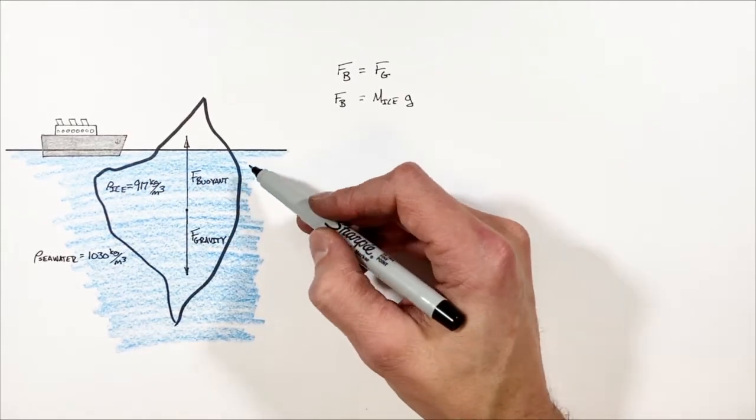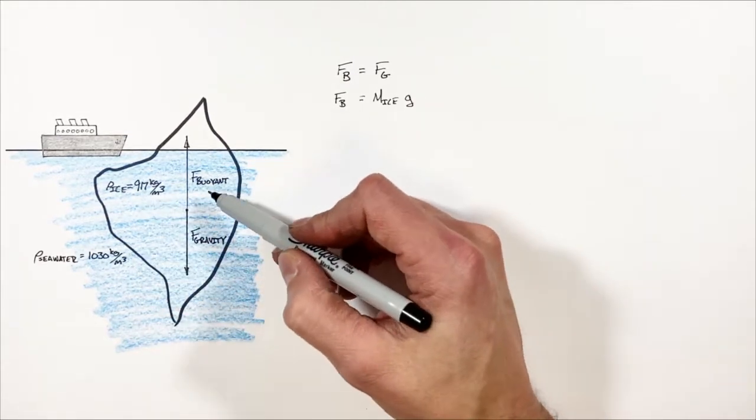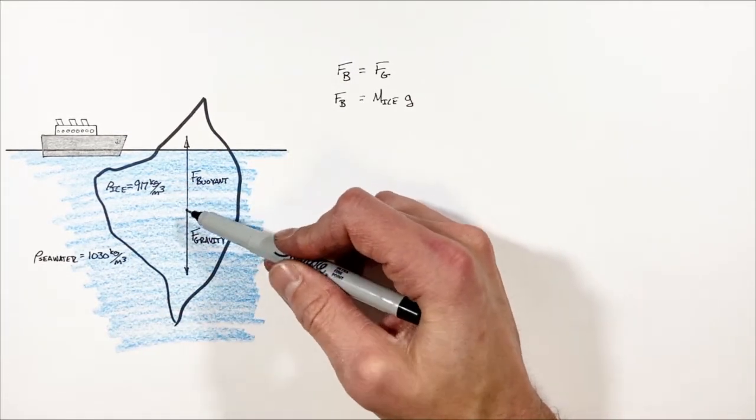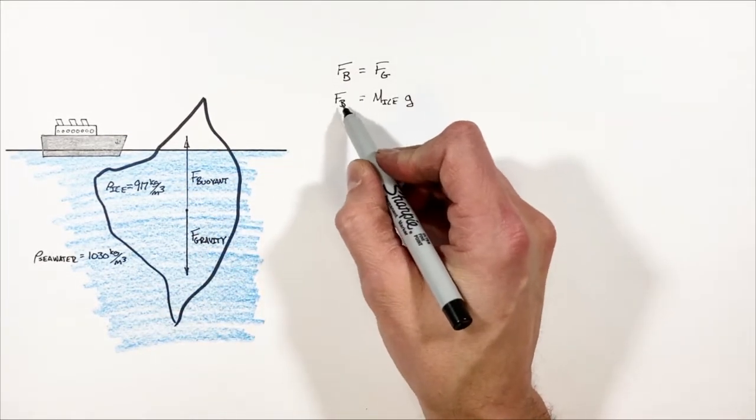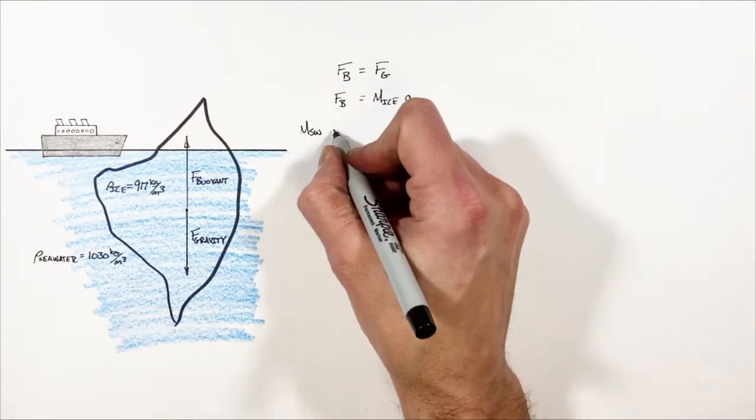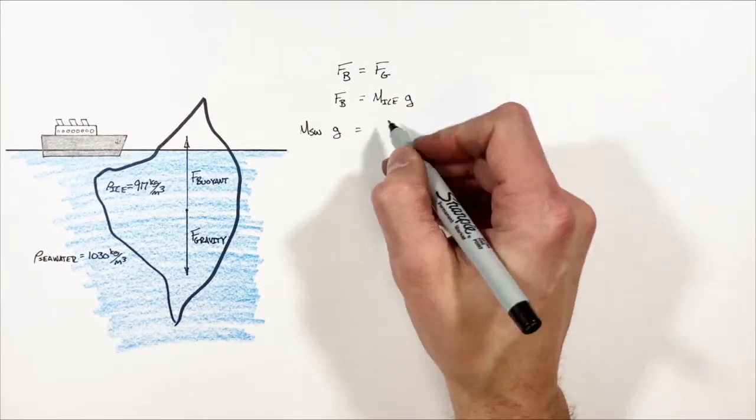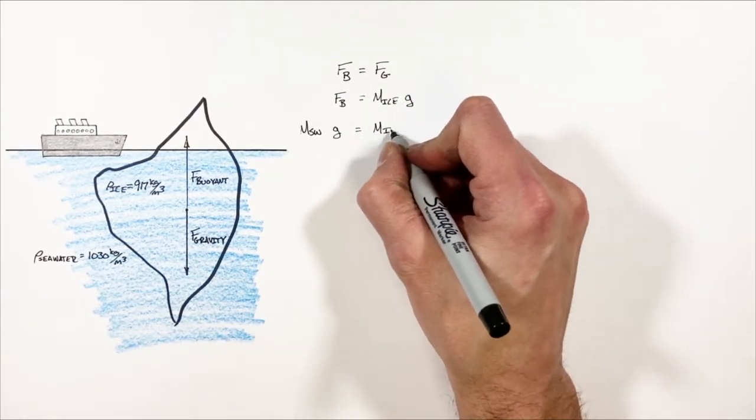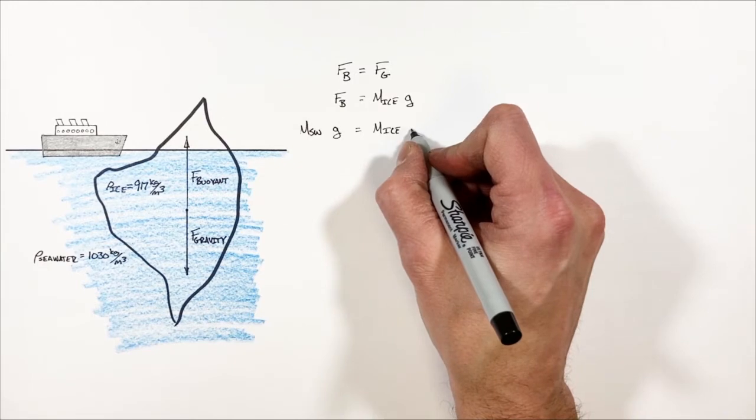And in this problem, that means the weight of seawater which is displaced by the iceberg is going to be equal to the buoyant force. So that's going to be the mass of the seawater multiplied by the acceleration due to gravity. That's going to be equal to the mass of the iceberg, again multiplied by the acceleration due to gravity.